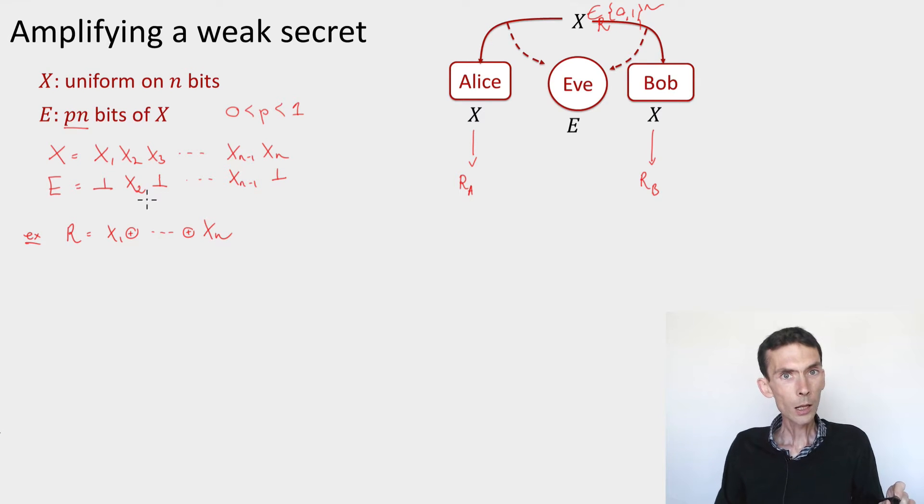But as long as the eavesdropper doesn't have absolutely all the bits, it means that one of these bits, for instance in my example it's x_1, is random. And you know that if you take a parity of a bunch of bits, as soon as one of them is random, then the parity is random. So this is going to work as long as p was not 1.